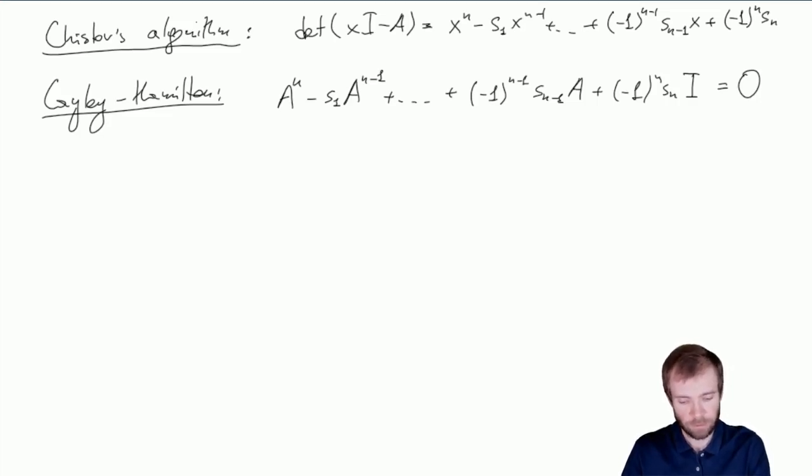And now out of this, we can express the identity matrix as Sₙ inverse times sum for i from 0 to n minus 1, minus 1 to the power of i, Sₙ minus 1 minus i times A to the power of i plus 1.